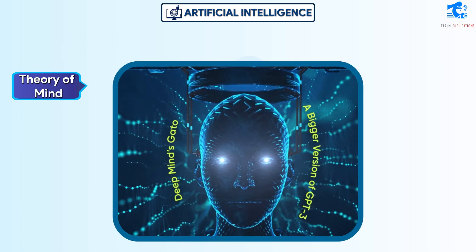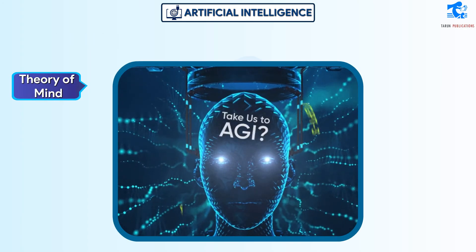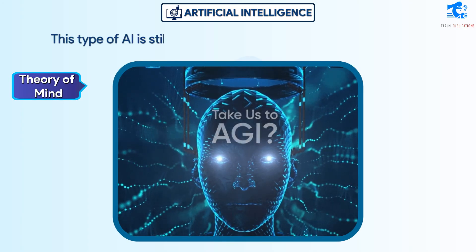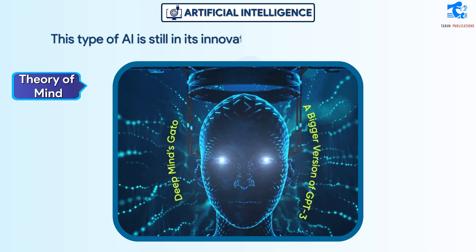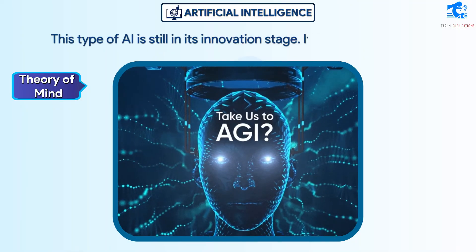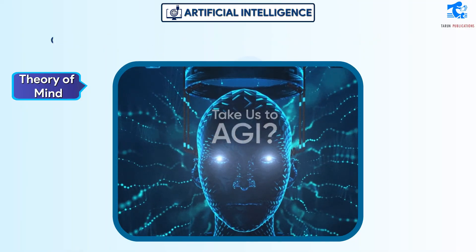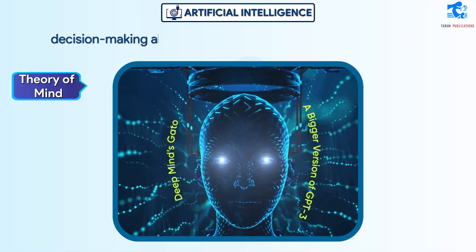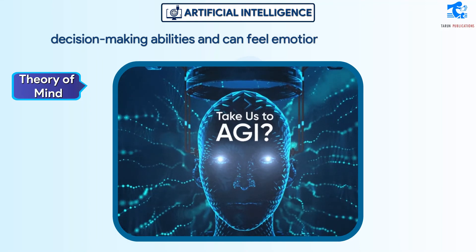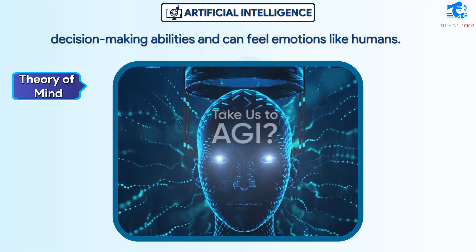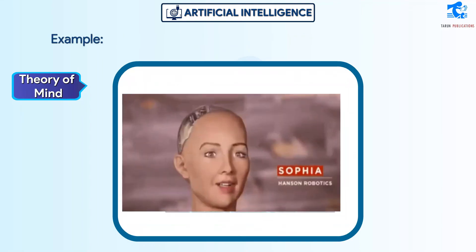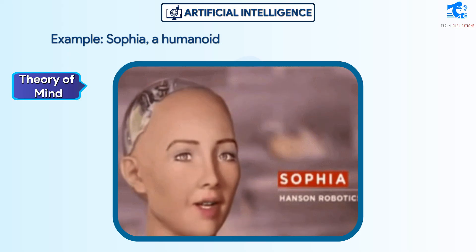Theory of Mind is a type of AI still in its innovation stage. It is equipped with decision-making abilities and can feel emotions like humans. An example is Sophia, a humanoid robot.